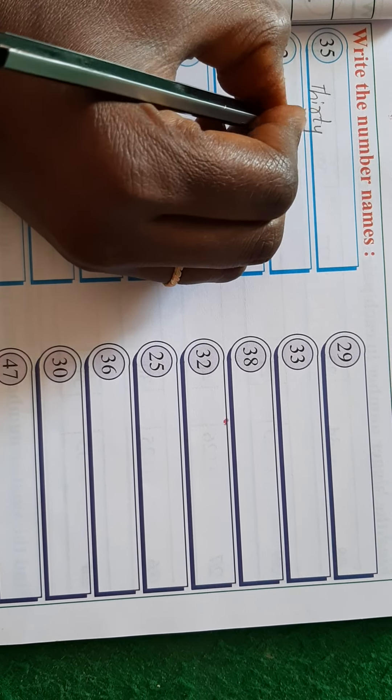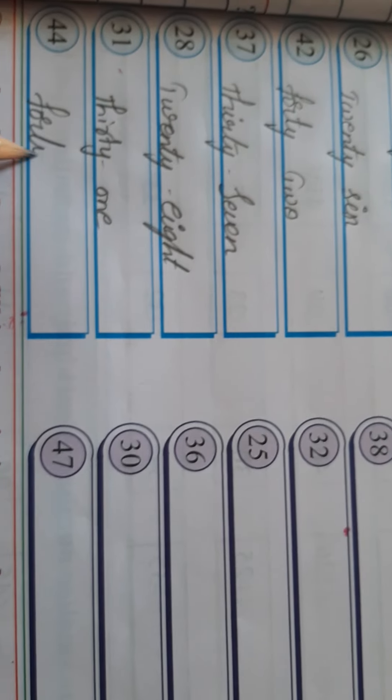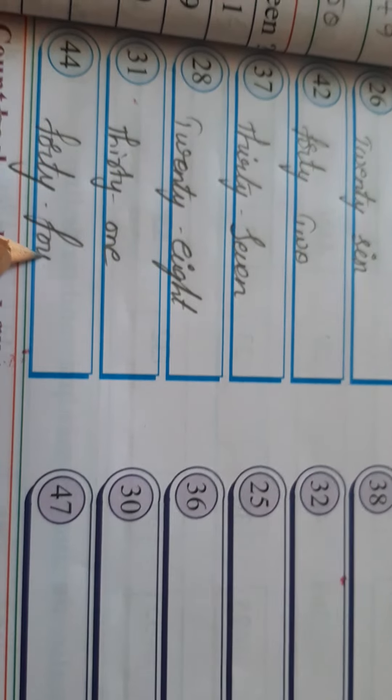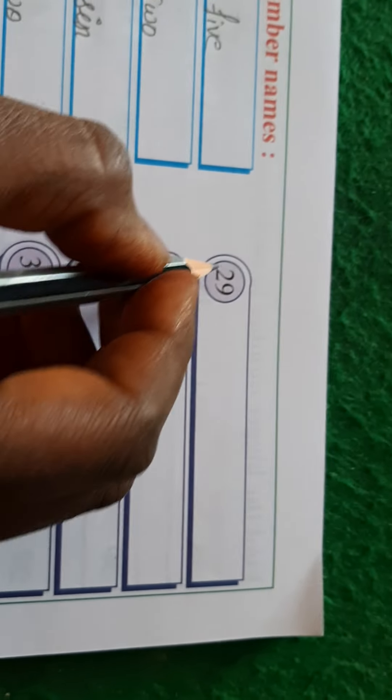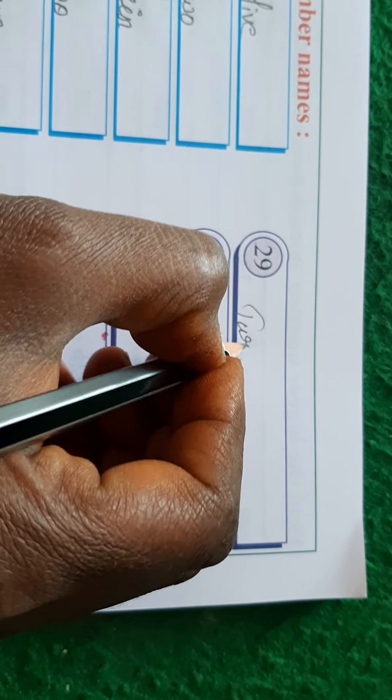Next, 3 7 is 37: thirty is T-H-I-R-T-Y, and seven is S-E-V-E-N. Next, 2 8 is 28: twenty is T-W-E-N-T-Y, and eight is E-I-G-H-T. That gives us 28.